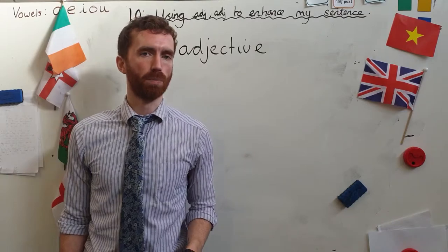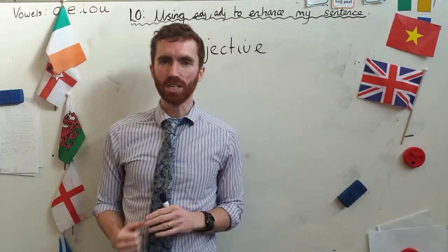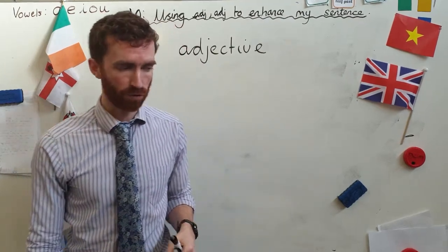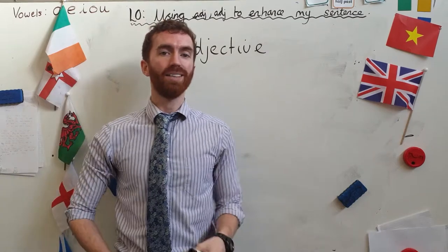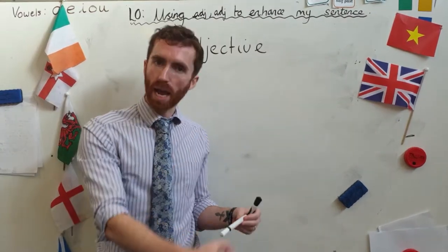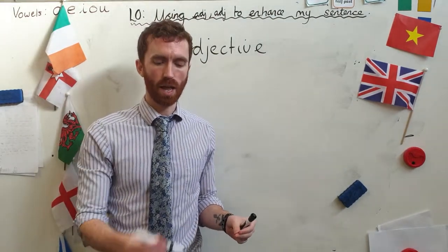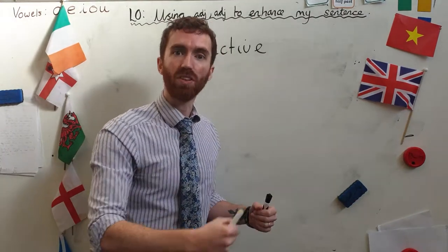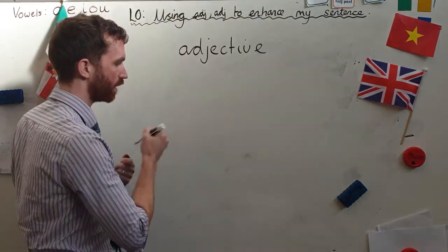Here's a quick game I'd like you to play with somebody you're with. You're going to take it in turns. One person says a noun — for example, the first person might say 'pen.' The next person has to say an adjective that describes the noun. So it might be 'pen' and you might say 'long.' Then when you go back to the next person, they have to say a noun that is long. Let me show you what that looks like.